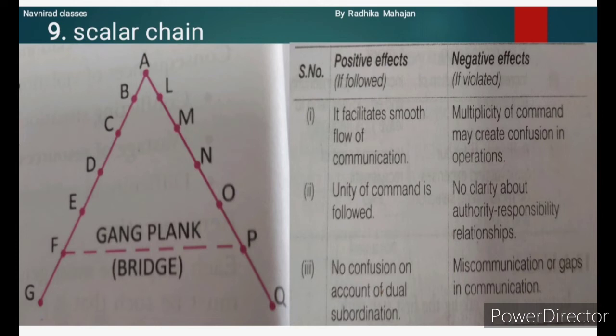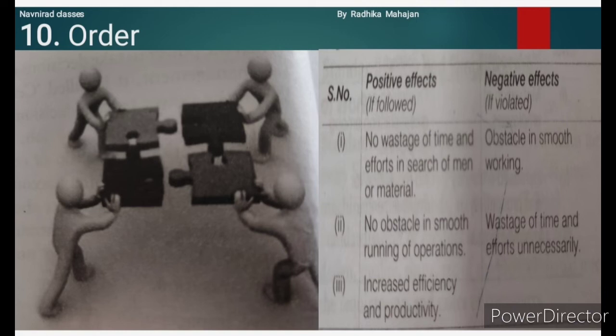Principle 10: Order. According to this principle, there should be an orderly arrangement and a specific place for everything and everyone in the organization. If followed: no wastage of time and efforts in search of man or material, no obstacles in smooth running of operations, and increased efficiency and productivity. If violated: obstacles in smooth working and wastage of time and efforts unnecessarily.